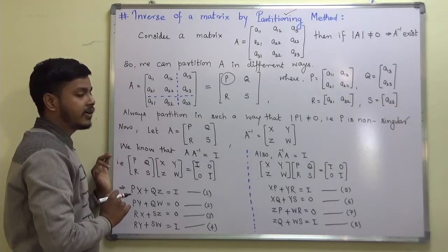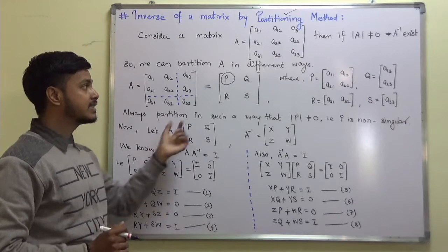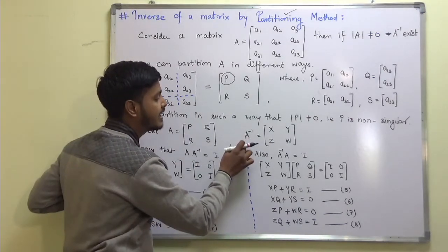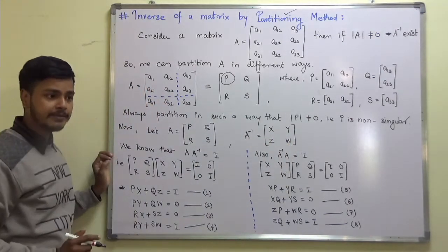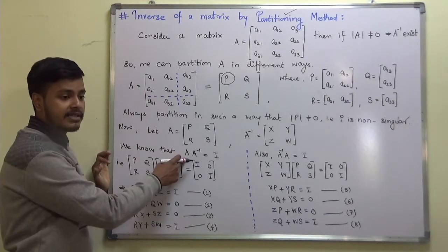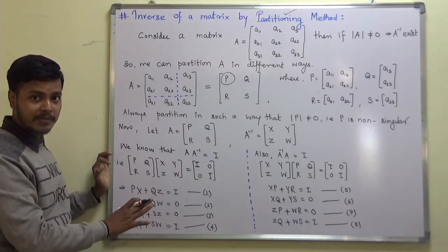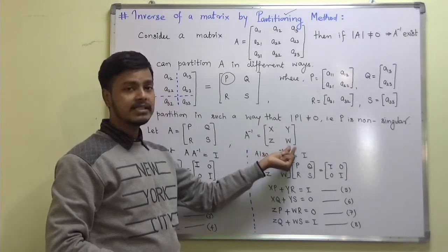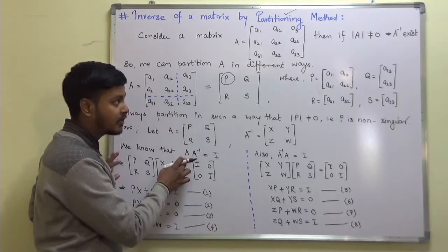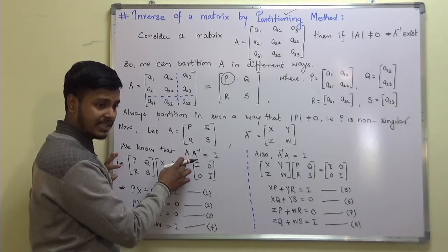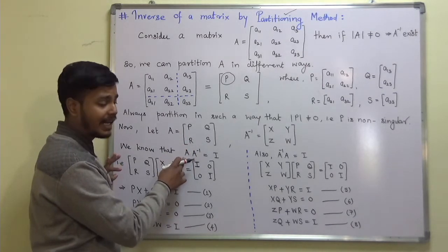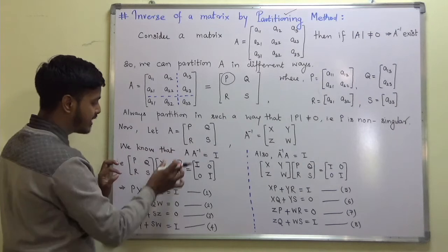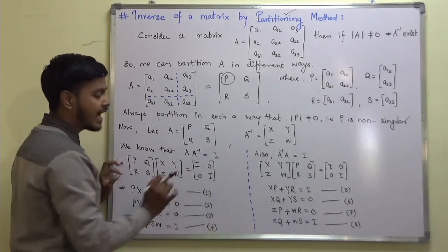If you have a matrix A and it is a non-singular matrix, its inverse must exist. I am letting this inverse of the matrix be composed of blocks X, Y, Z, and W. To find out the inverse of a matrix means to find out X, Y, Z, and W. I am using the basic idea that if you have matrix A and multiply it by its inverse you will get the identity, so A times A inverse equals I.